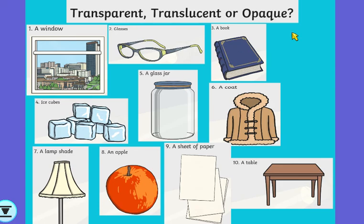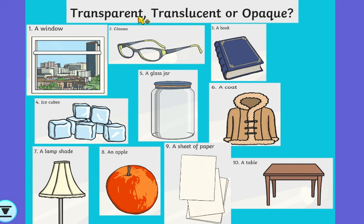Welcome back. So let's just have a little look at my pictures. Have a think and a little look. A window — transparent, translucent, or opaque? Well, you can see clearly through a window, so we know that a window is transparent. Glasses — well, they were an example earlier, weren't they? Also transparent.